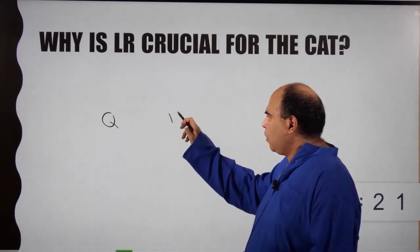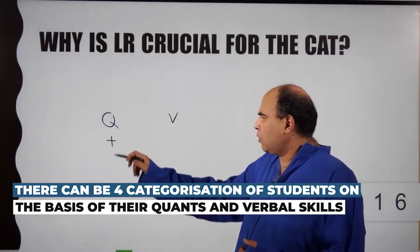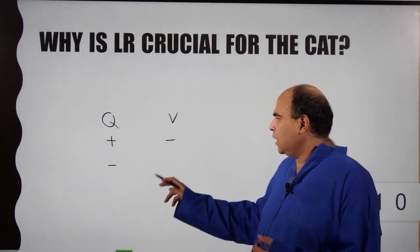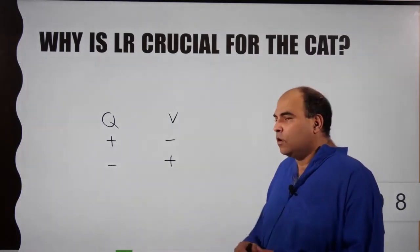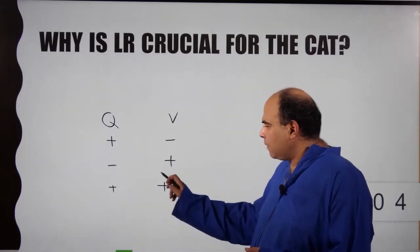So there are four kinds of students. One whose quant skills are strong while verbal skills are not so strong. The second is people whose quant skills are not so strong, verbal skills are strong. The third kind of people whose both skills are strong - obviously these people have a big advantage.